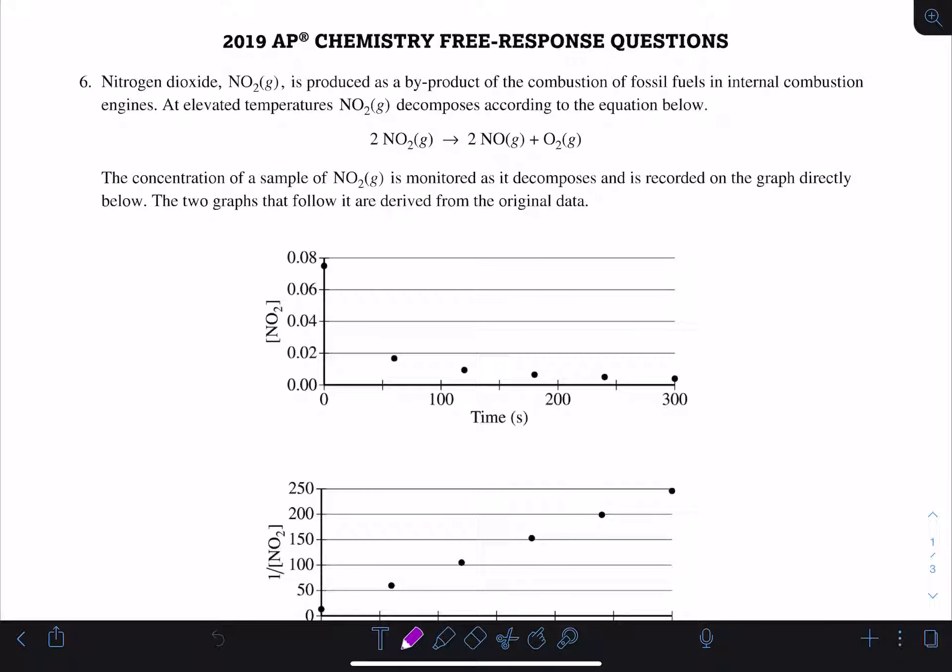This is 2019 AP Chemistry free response question number six, investigating the reaction of nitrogen dioxide, which is a byproduct of the combustion of fossil fuels. We're given this reaction that at elevated temperatures nitrogen dioxide decomposes into nitrogen monoxide and oxygen gas.